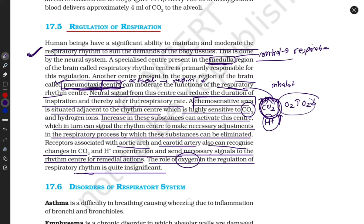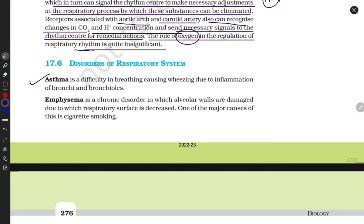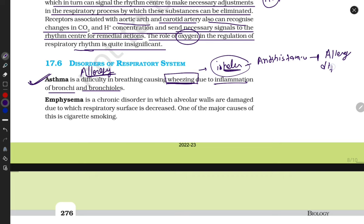There are some disorders like asthma. During inhalation a particular person creates some sounds, wheezing, because of inflammation of bronchi and bronchioles. This person suffers from allergic conditions, mostly they are highly sensitive. So doctors recommend to them inhalers. Inhalers contain antihistamines. These are allergy depressants; they depress allergy.